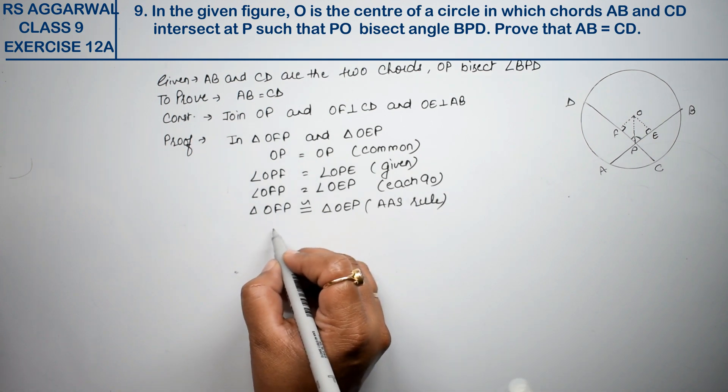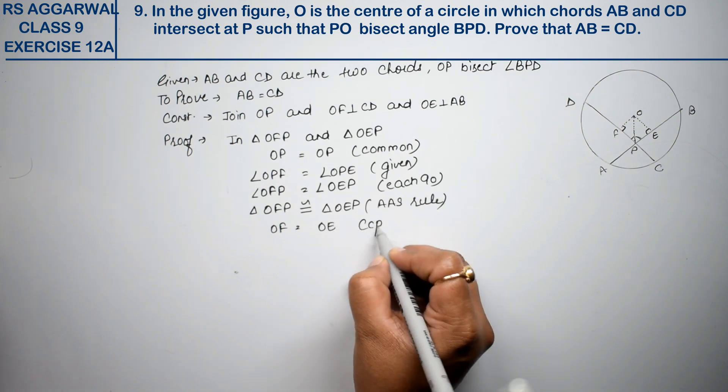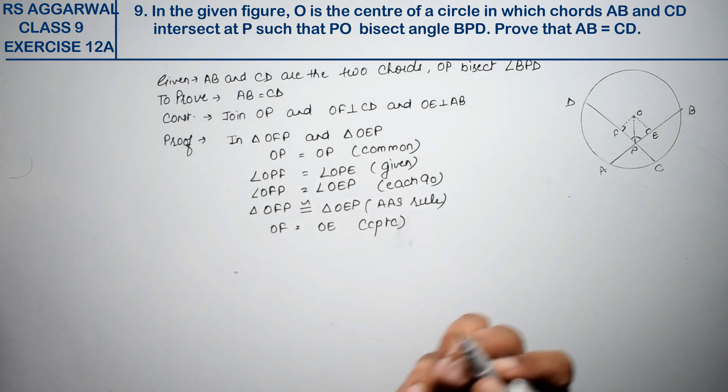Now when they are congruent by ASA rule, we can easily say that OF equals OE by CPCTC. Right?